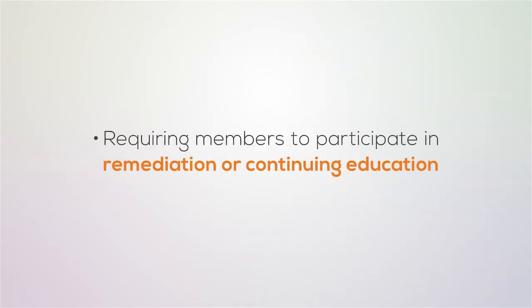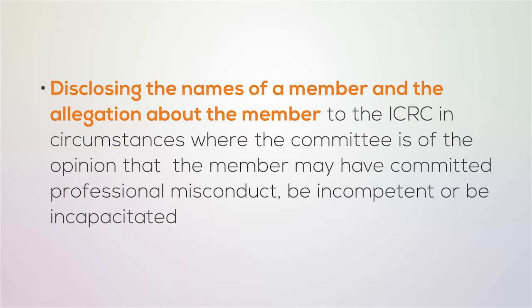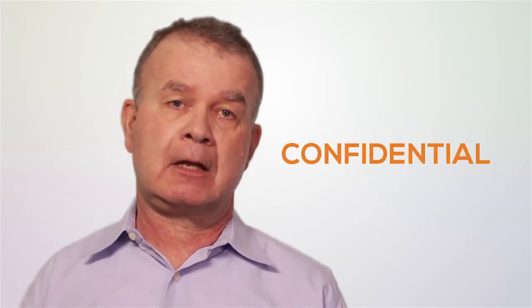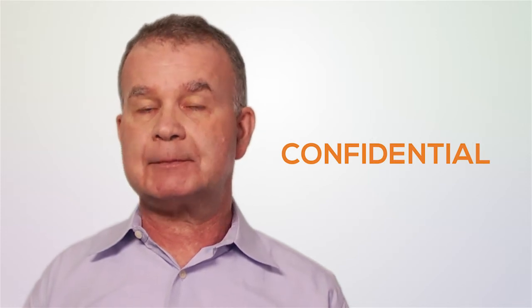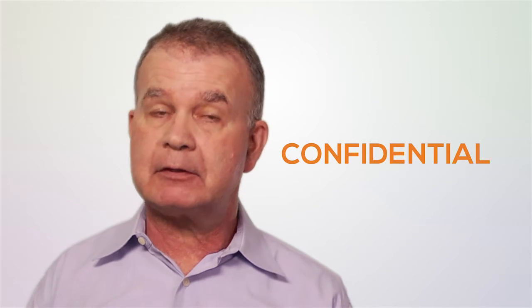Members who are assessed through the quality assurance process and deemed to be unsuccessful can be considered by the Quality Assurance Committee. It has a number of resolutions available, including requiring members to participate in remediation or continuing education, applying terms, conditions, and limitations to members' certificates, and disclosing the names of a member and the allegations about the member to the ICRC in circumstances where the committee is of the opinion that the member may have committed professional misconduct, be incompetent, or be incapacitated. An important principle is that information collected through the quality assurance program is confidential and cannot be shared with other college program areas. The only exception is the authority to provide the member's name and allegations if the member is believed to have committed professional misconduct, to be incompetent, or to be incapacitated.